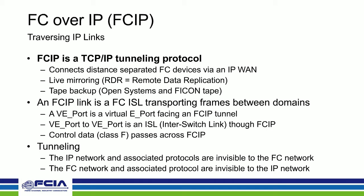In terms of protocol, FCIP is a tunneling protocol. We take Fiber Channel, encapsulate it in IP, and tunnel it from one tunnel endpoint to another tunnel endpoint. We can connect all types of Fiber Channel devices — arrays, tape — and if it's live mirroring, we generally call that RDR, which is remote data replication.